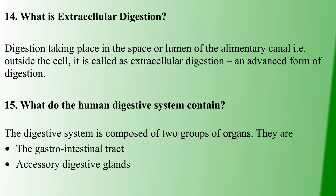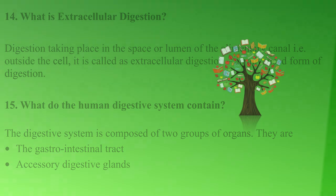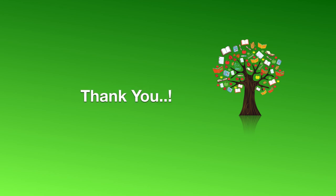Next question: what is the human digestive system? It consists of the gastrointestinal tract and accessory digestive glands. These questions are from the 6th and 7th standard books — this is basic content, but important to remember. Please subscribe to our channel, like, share, and support our videos. Thank you.